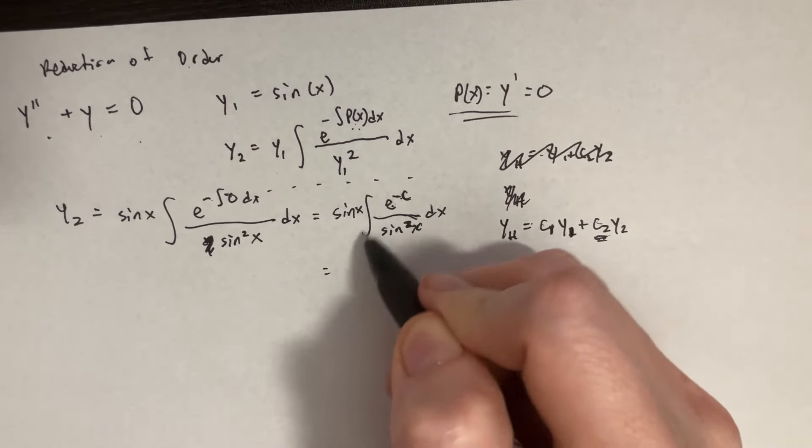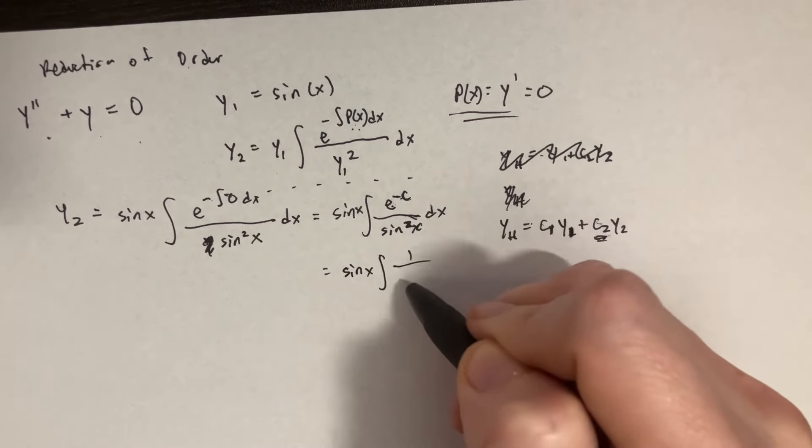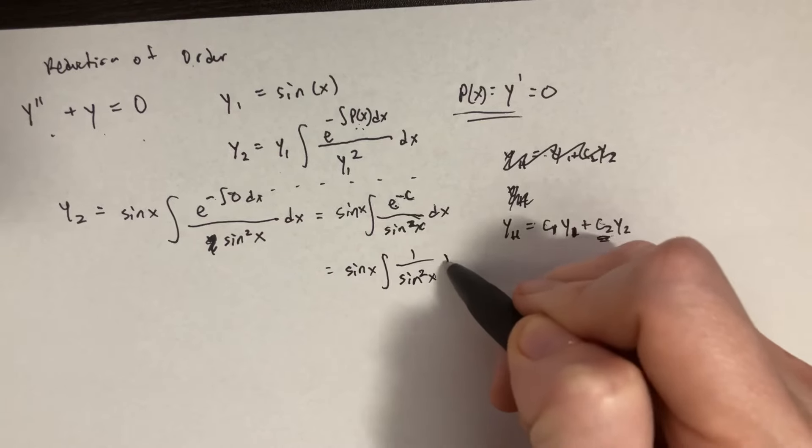So we're literally going to say the same thing. It's going to be sine of x integral of 1 over sine squared of x dx.